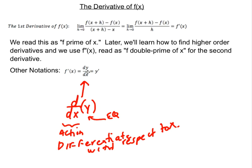Even though we write it as dy/dx, what it's actually saying is: do this command — differentiate — to this equation, differentiate y. All three notations — y prime, f prime, and dy/dx — are totally fine and interchangeable. You could be asked to find f prime, find dy/dx, find y prime, or just be told to differentiate, and all of those mean the same thing.